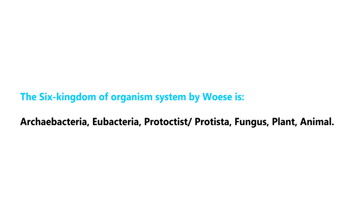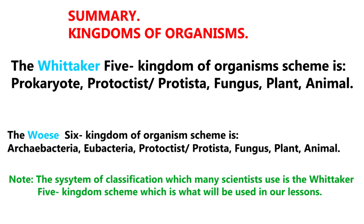Woese's six kingdom scheme is: Archaebacteria, Eubacteria, Protoctist, Fungus, Plant, and Animal. The five kingdoms of organisms by Whittaker that we are going to use are: Prokaryote, Protoctist, Fungus, Plant, and Animal. We have already discussed prokaryotes, which are bacteria, and now we are going to look at the rest.